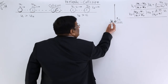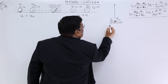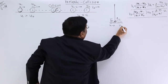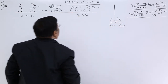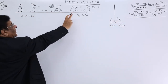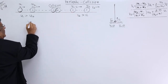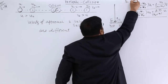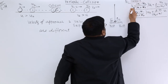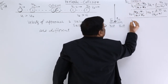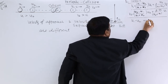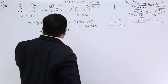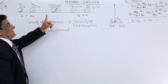Here, the velocity of approach is U1 minus 0, and the velocity of separation is V1 minus 0. These two are different. So, velocity of approach and velocity of separation are different. If they are the same, then that is elastic collision. In inelastic collision, they are different.